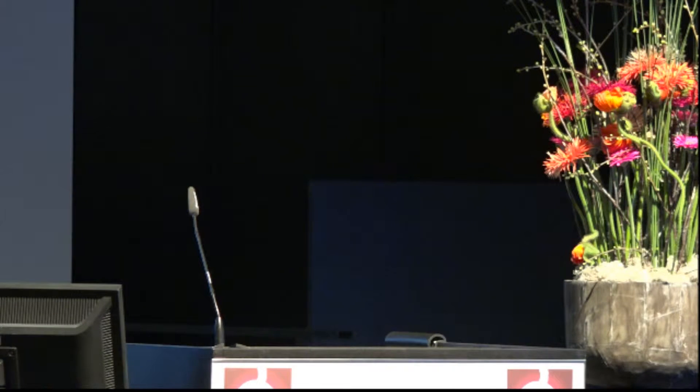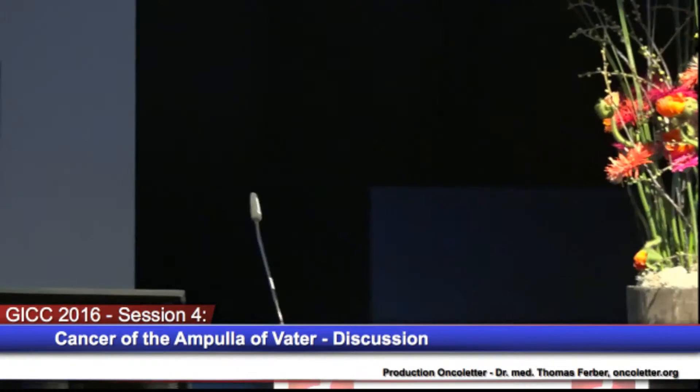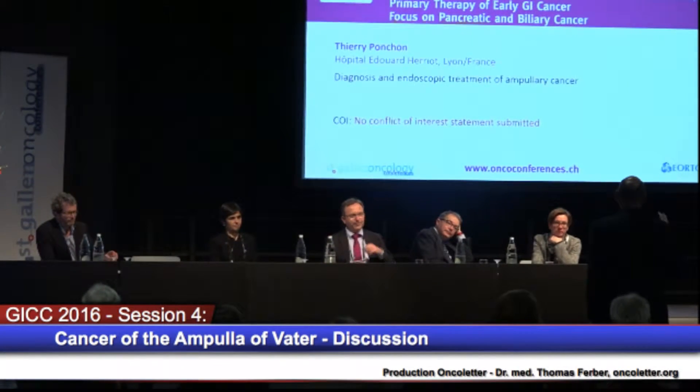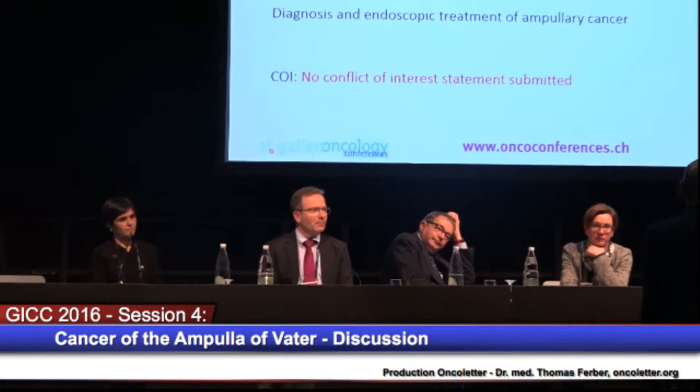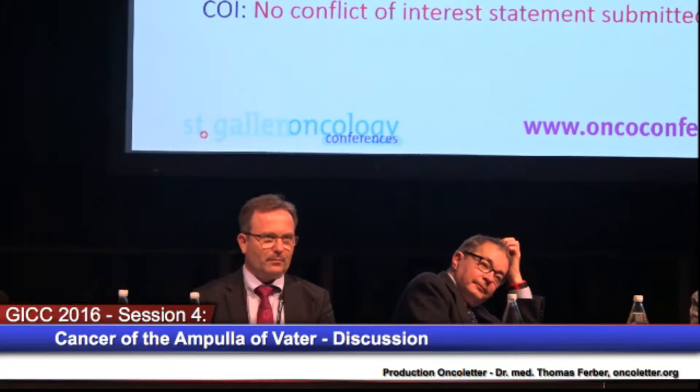I have a question for Daniela Aust. The distinction between pancreatobiliary and intestinal type of ampullary carcinoma — do you always make immunohistochemistry or is it sometimes very clear just from the histomorphological aspect? And I also wanted to ask you, is there inter-observer variability and could you make it clear how certain the diagnosis is when we get it?